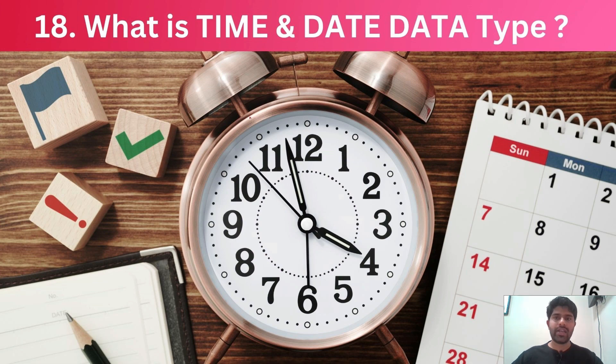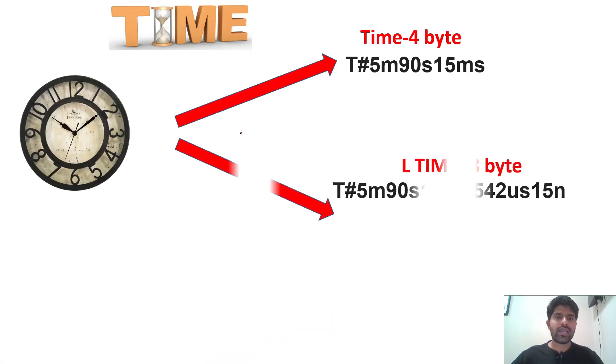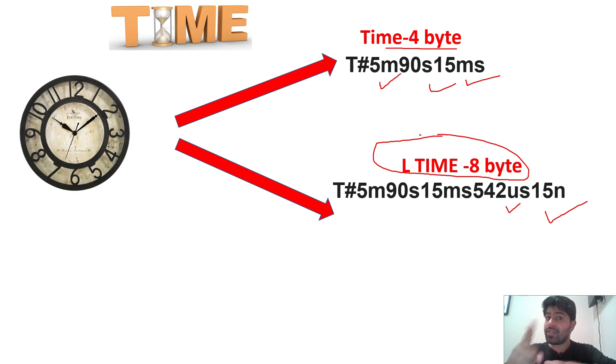So, what is the time and data type? So, for time and data also, we have data type. If you are using the four bit, it will show only minutes and seconds and milliseconds. But if I want to see also microseconds and nanoseconds, I have to use the eight bit. This your time also have the data type.